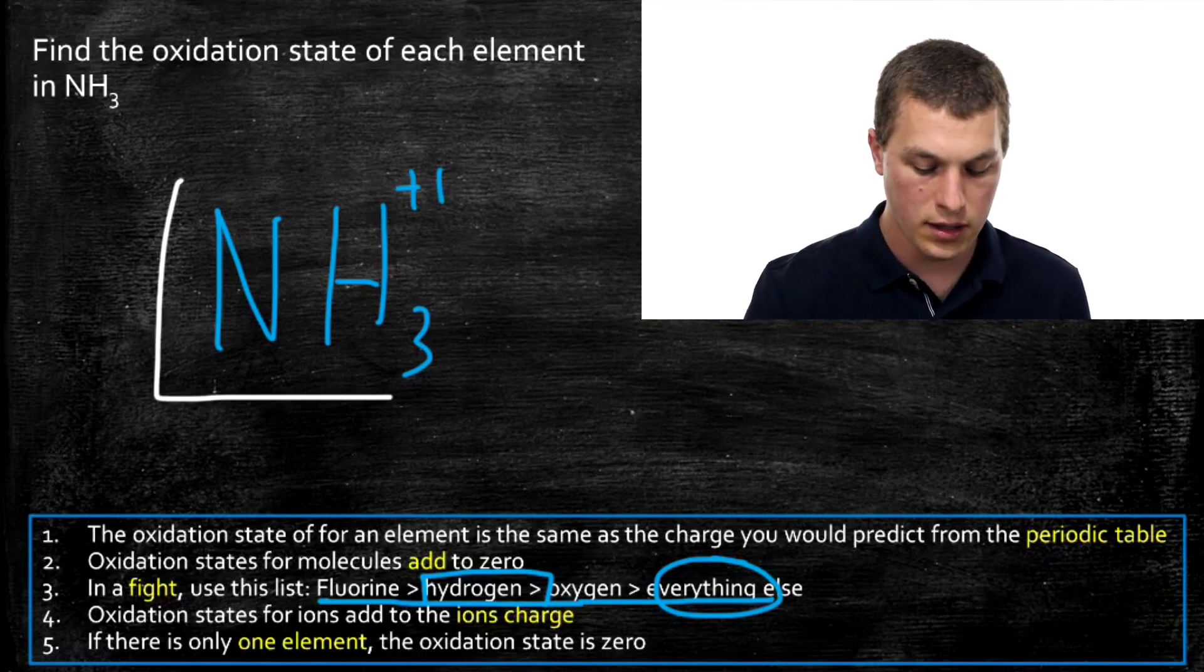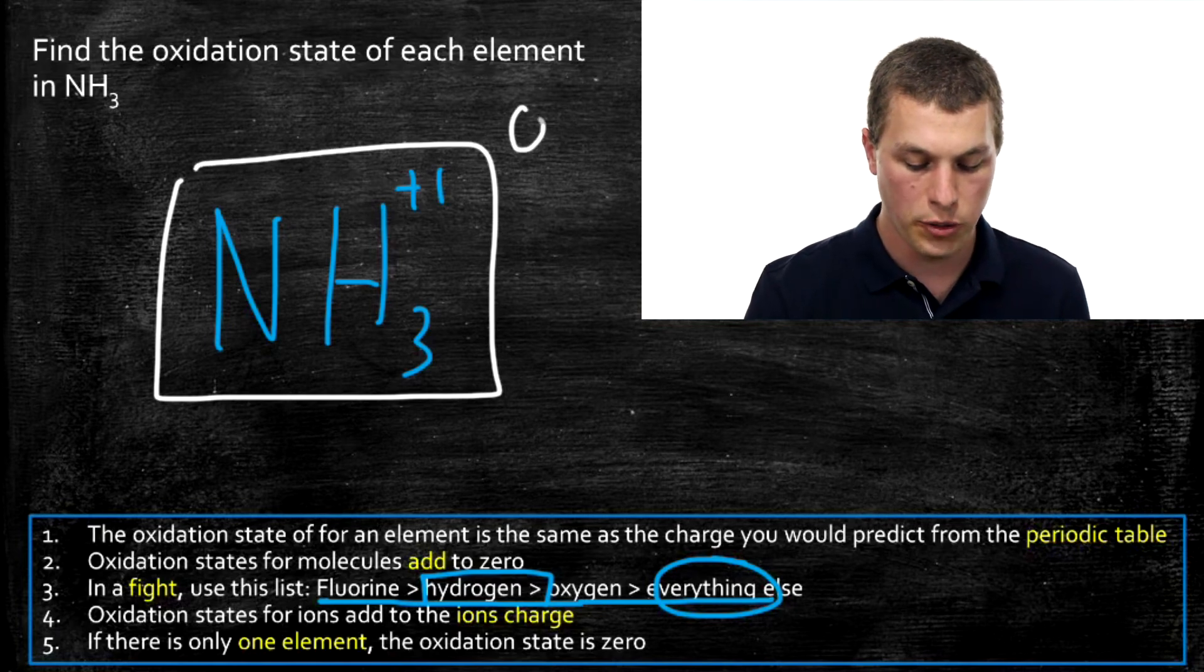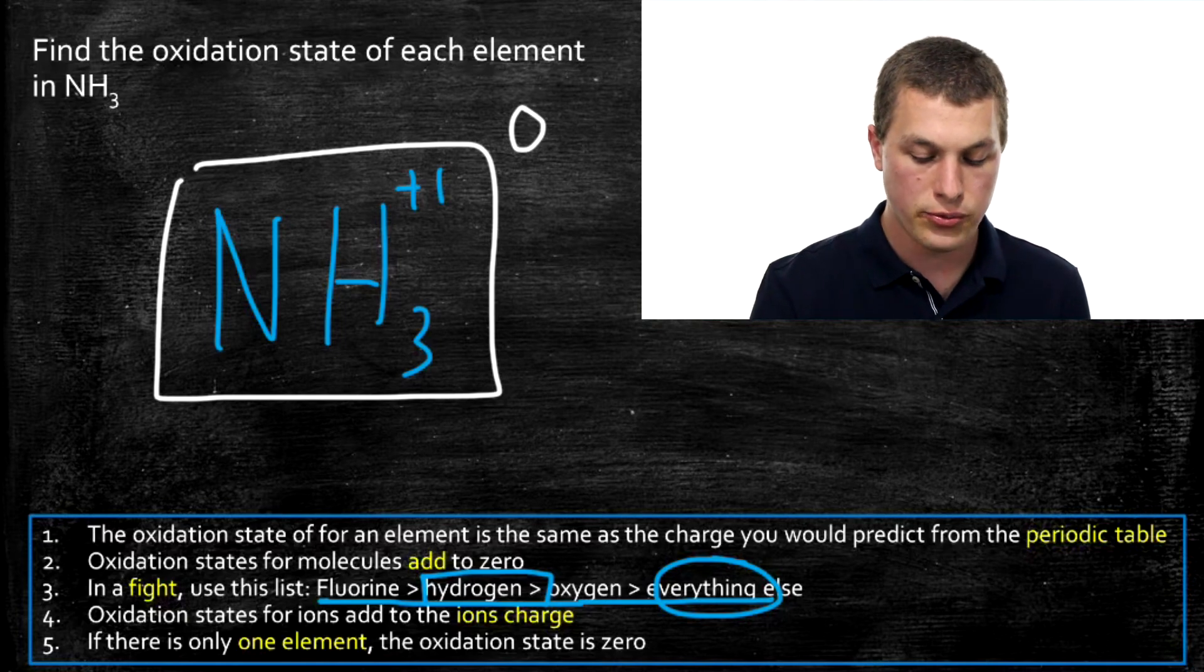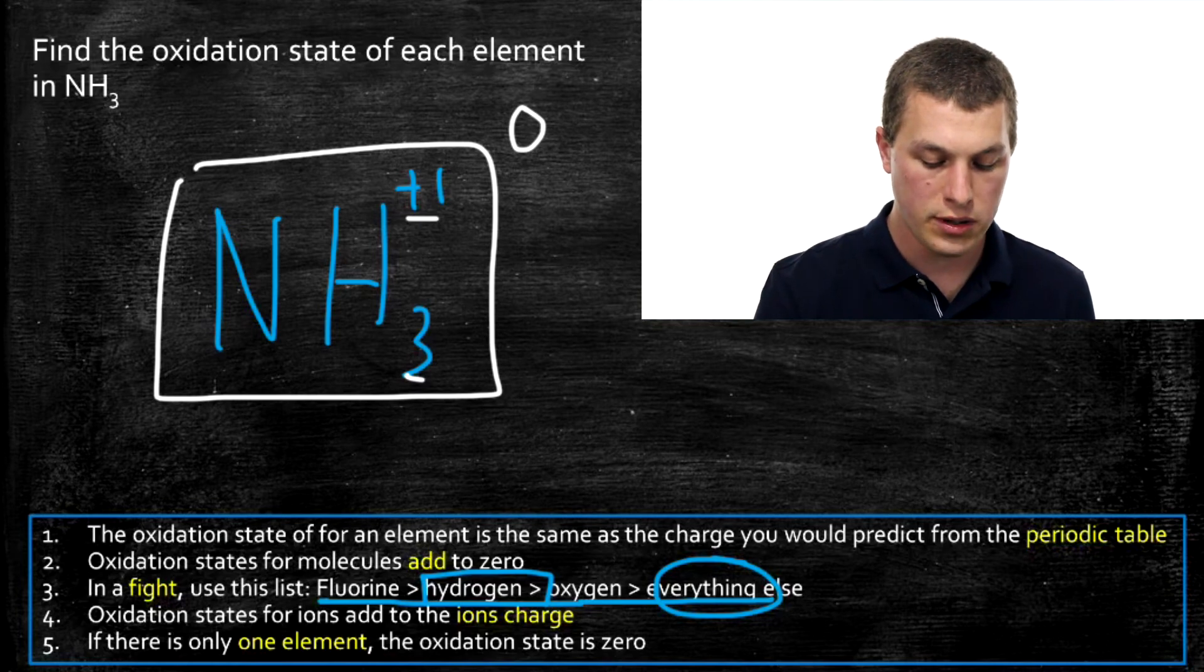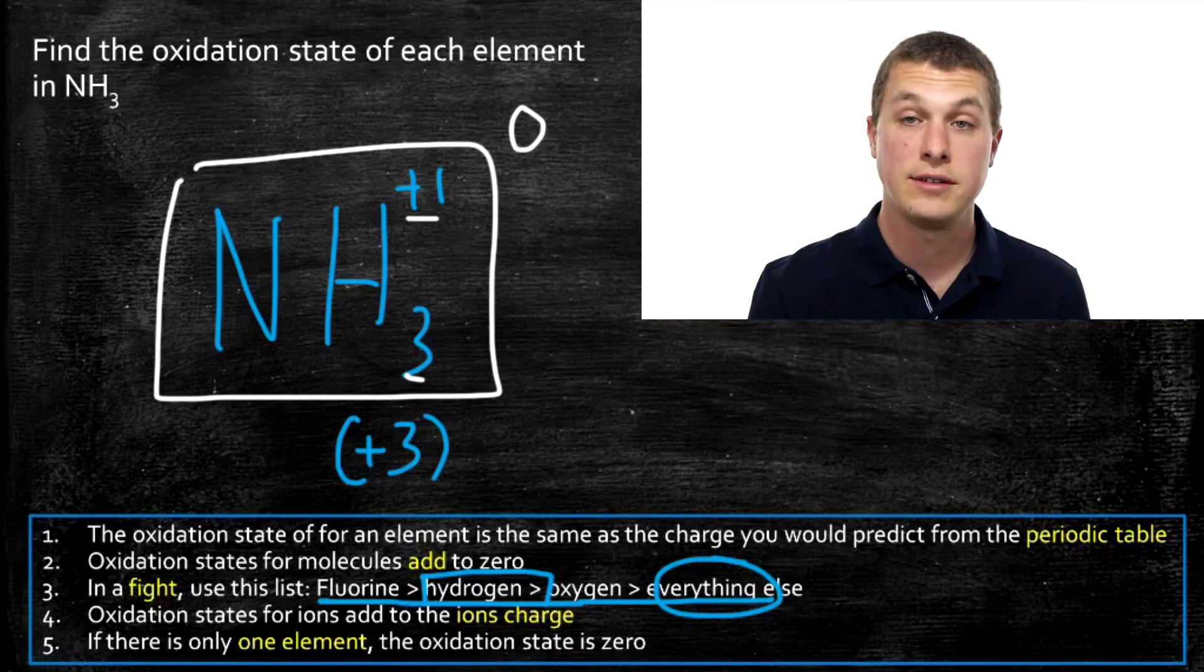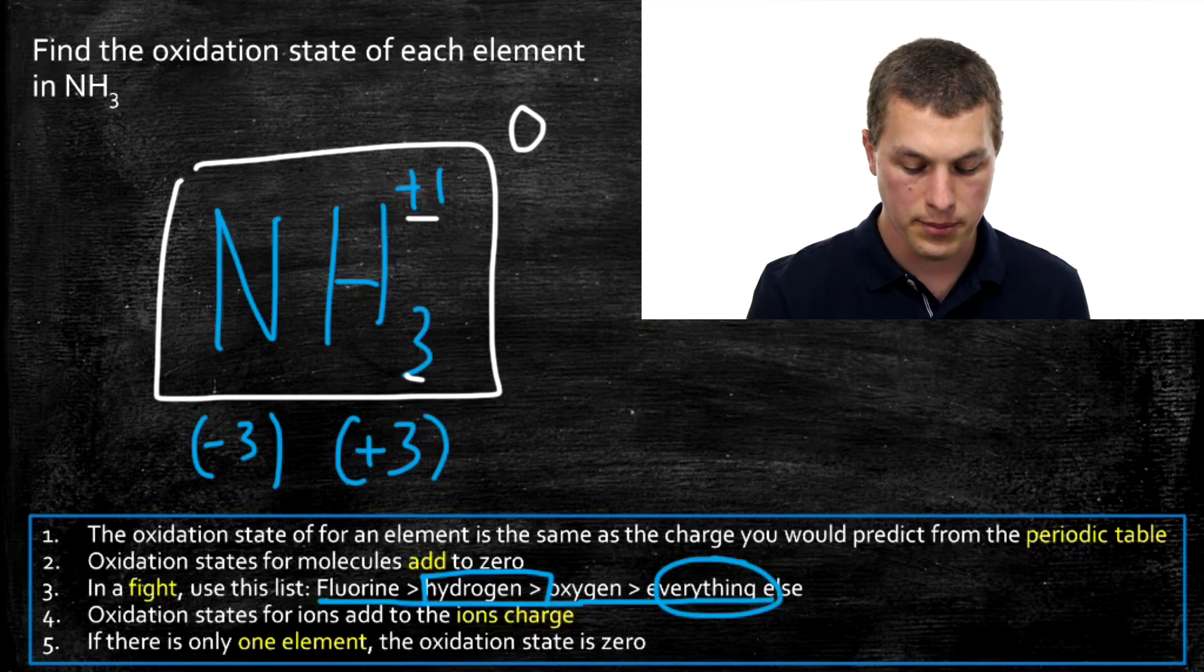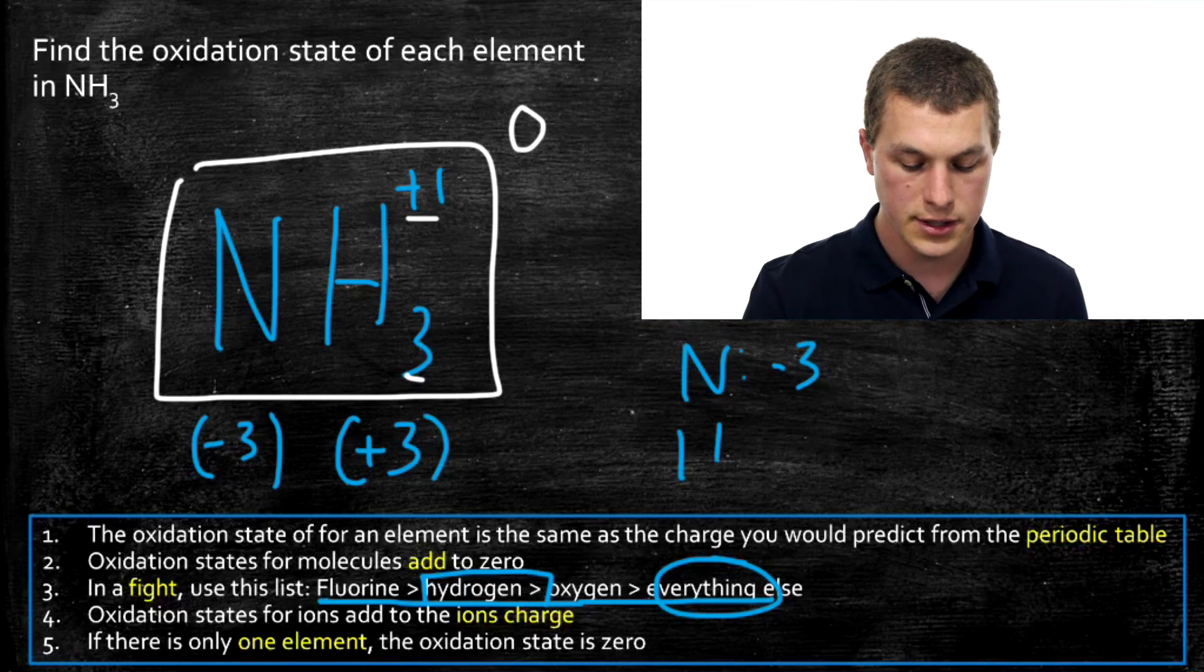I need the whole thing to add up to zero because ammonia is neutral. It's a molecule, not an ion. I have three things each at plus one. That means that hydrogen contributes a total of plus three to the oxidation state. I have just one nitrogen and I need it to add up to zero. So this must be minus three. Nitrogen has an oxidation state of minus three, and hydrogen has an oxidation state of plus one.